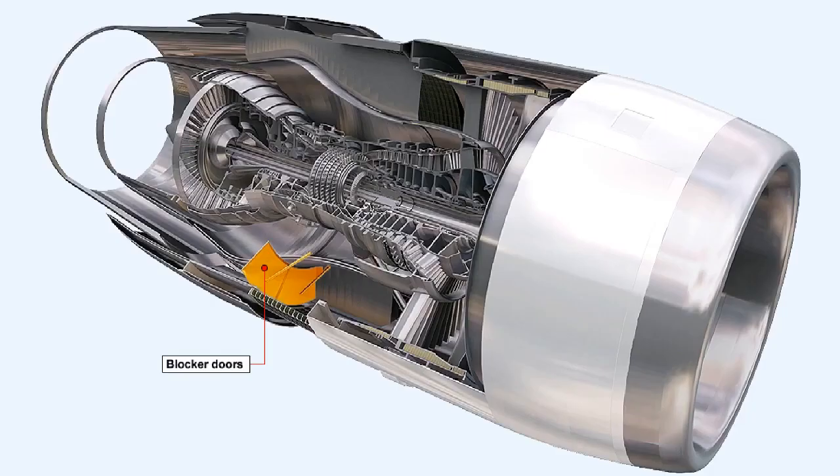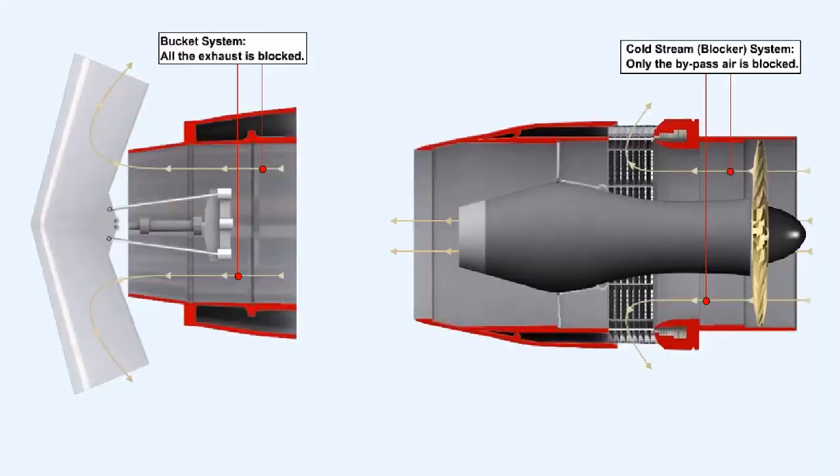The cold stream reverser or blocker system is only used on high bypass ratio fanjet engines. The essential difference between the blocker system and both the clamshell door and bucket reversing systems is that while the latter use the hot exhaust as the means of reverse thrust,